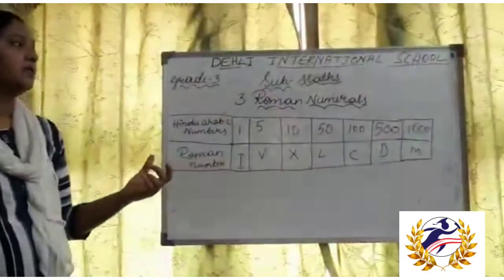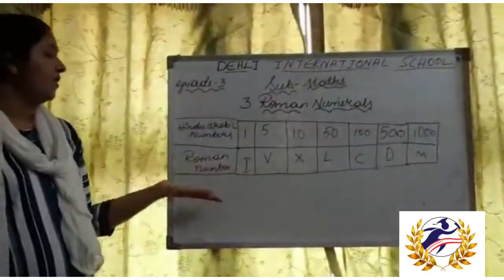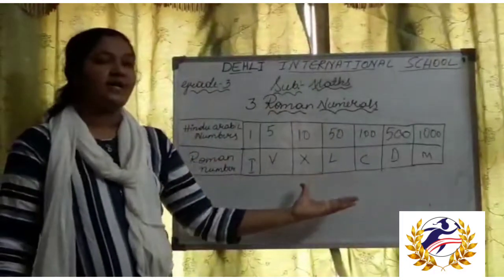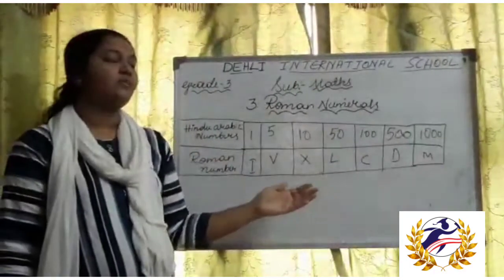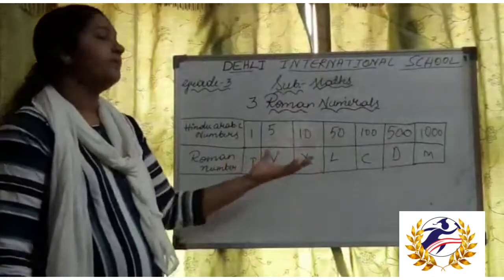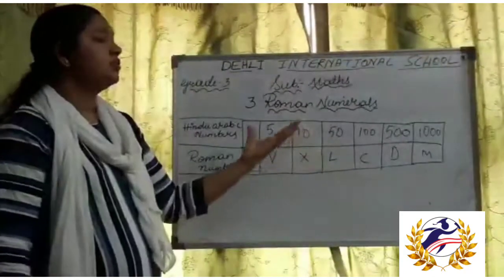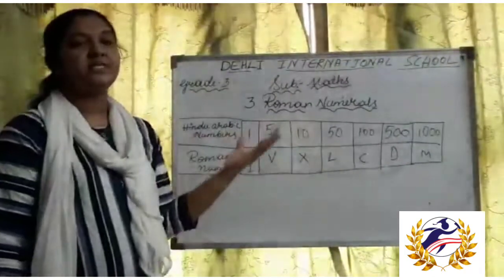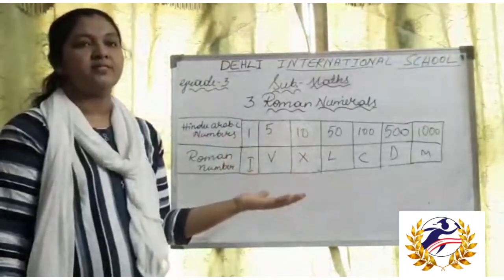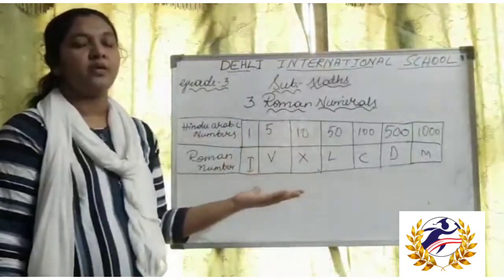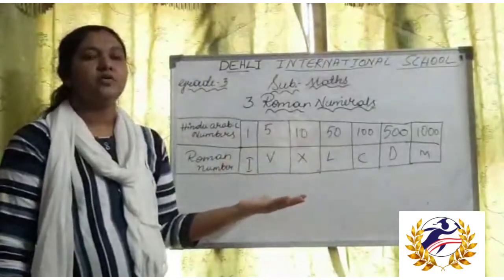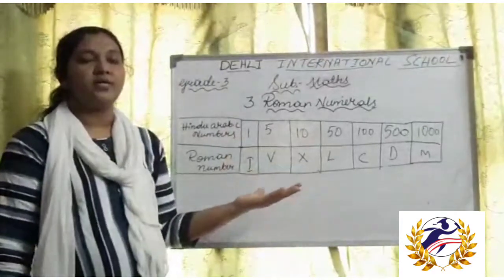Now, let us work on the numbers 1 to 39 today and we will see some rules. There is no symbol for 0 in Roman numerals.